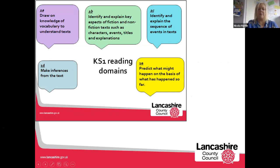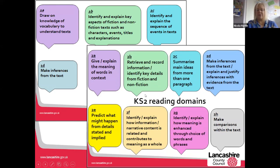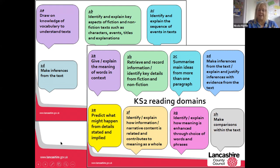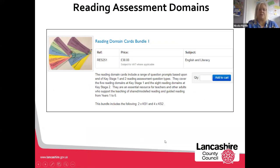Lots of people know about key stage reading domains. Key Stage 1 has five reading domains: vocabulary, literal, sequencing, inference, and prediction. For Key Stage 2 there are eight reading domains with further detail, including: identify, explain how meaning is enhanced, look at how narrative content is contributed, make comparisons, and sequencing has developed into summarising. We use these to underpin and link with the key learning, and we have developed support resources known as the reading keyrings. These are prompts colour-coded to the domains which can then be used to support quality questioning.